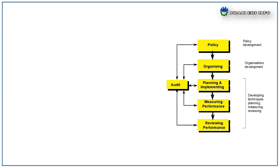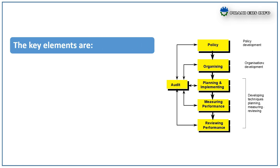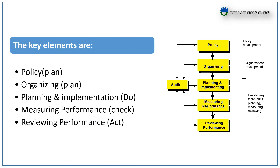Now, the key elements of the safety management system are: the Plan stage includes Policy and Organization; the Do stage includes Planning and Implementation; the Check stage includes Measuring Performance; and the Act stage includes Reviewing Performance. Let me brief each key element one by one.